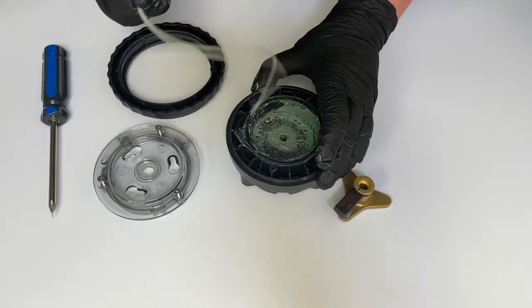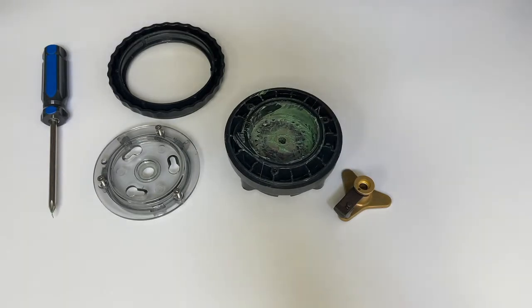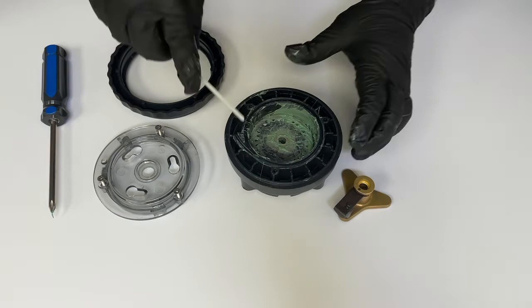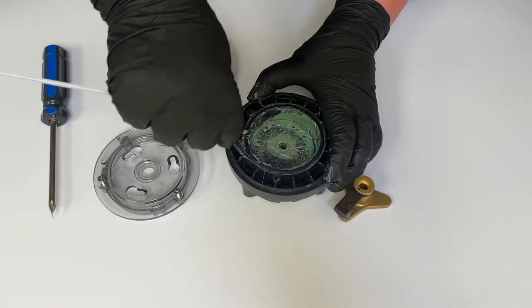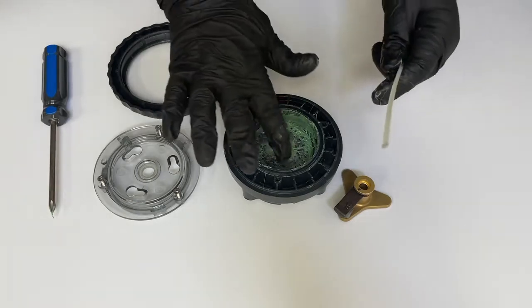Remove the worn cam and discard. Clean out the channel and lubricate both the channel and the angle tip of the cam with aqua shield.